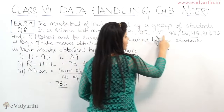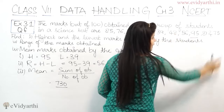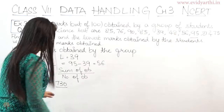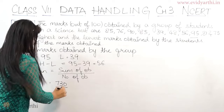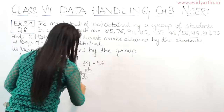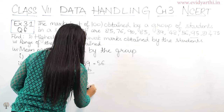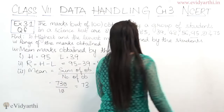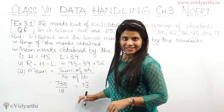Counting the observations: 1, 2, 3, 4, 5, 6, 7, 8, 9, 10. So the total number of observations is 10. The zeros cancel out, and this will come as 73. So the mean of the marks is 73.